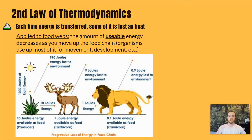When the elk eats the grass, it gets those 10 joules, but uses up 9 of them for development, cellular respiration — and that energy is lost as heat to the atmosphere. Then when the lion eats the elk — and it's just a helpful diagram — it only gets that 1 joule of energy. So each time energy transfers from one organism to another, only 10% of the energy makes it to the next organism.